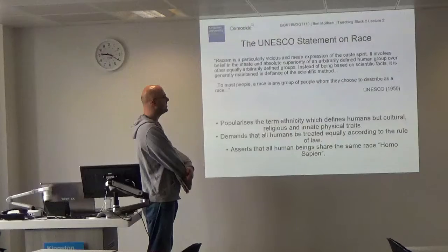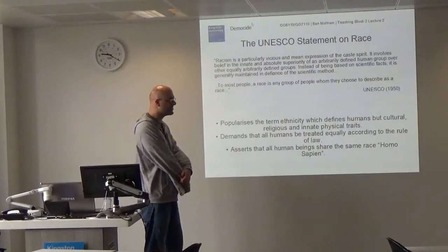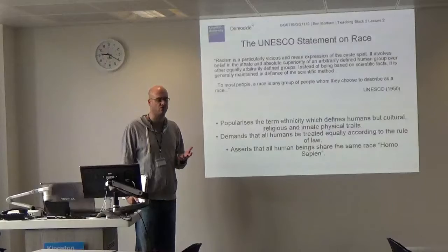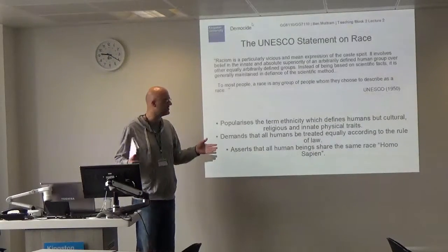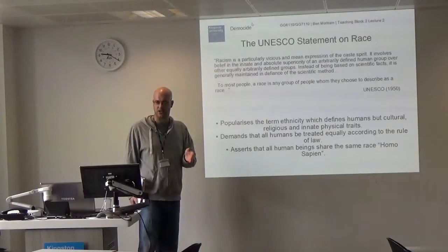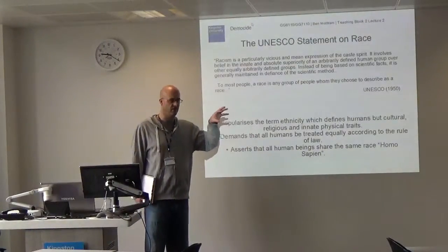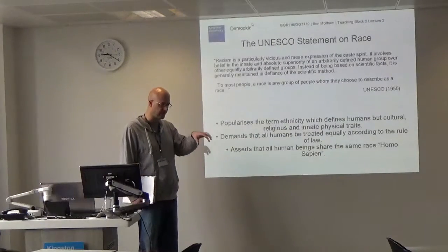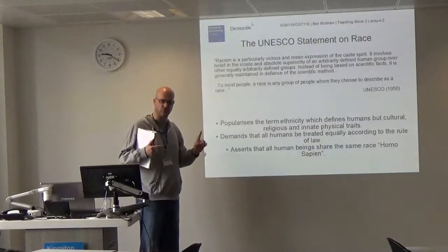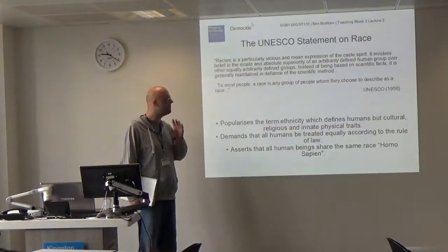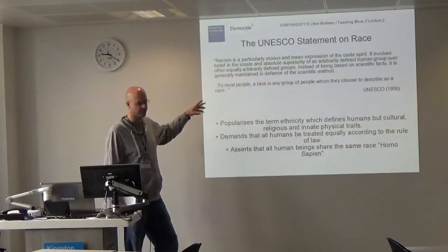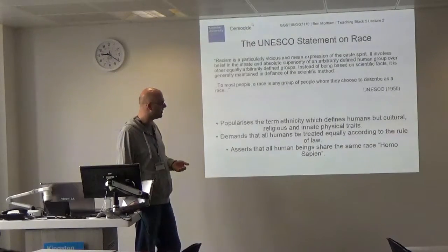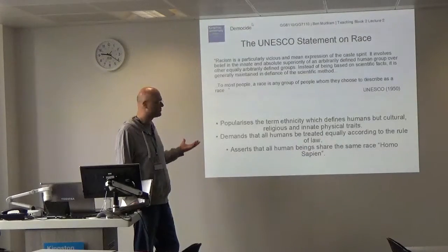They said 'to most people, a race is any group of people whom they choose to describe as a race.' The reason they say this is because when you look at the biology, humans haven't been around long enough to diversify into different species. The way you can describe different groups in the world is that you're more likely to have one set of genes than another. There is actually more diversity within a so-called racial group than there are differences between groups. Because of this, race on the whole doesn't really exist as a biological category.